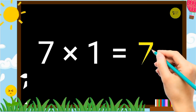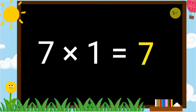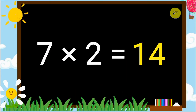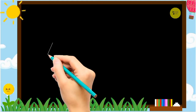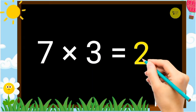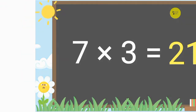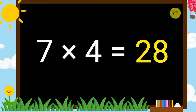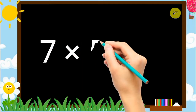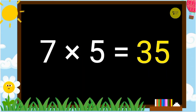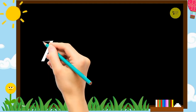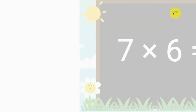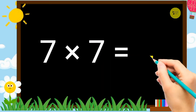7 1's a 7. 7 2's a 14. 7 3's a 21. 7 4's a 28. 7 5's a 35. 7 6's a 42. 7 7's a 49.